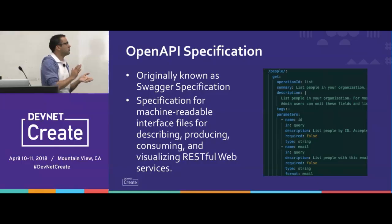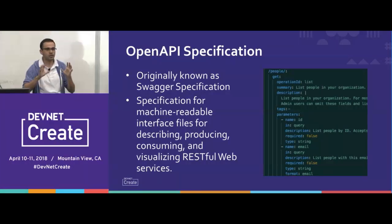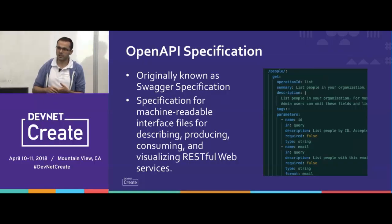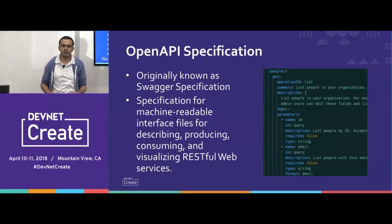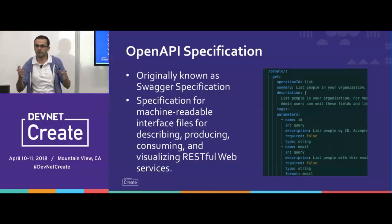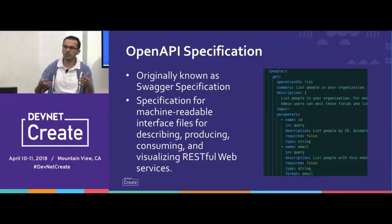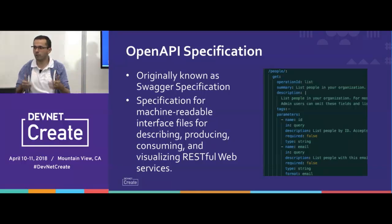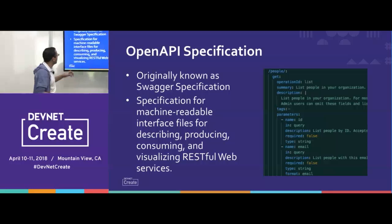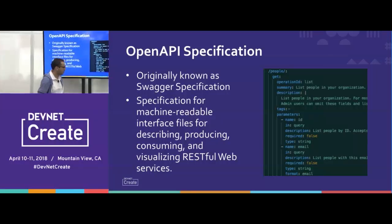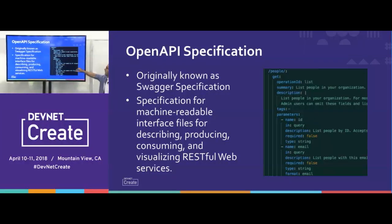Let's talk about OpenAPI. OpenAPI is a specification for describing REST APIs. It was previously known as Swagger, but then a couple of companies joined and changed the name to OpenAPI. It's actually a community effort to improve how APIs are being documented and defined. I'm going to give an example of how you define an API.